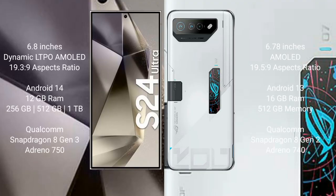Galaxy S24 Ultra comes with a 6.8-inch Dynamic LTPO AMOLED display, with a refresh rate of 3.9 to 120Hz. Asus ROG Phone 7 Ultimate comes with a 6.78-inch AMOLED display with a refresh rate of 5.9 to 165Hz. Samsung Galaxy S24 Ultra runs on the Android 14 operating system, while Asus ROG Phone 7 Ultimate runs on Android 13.